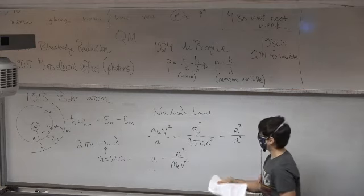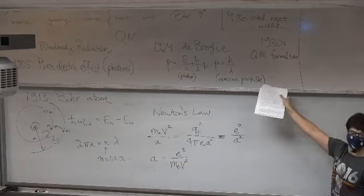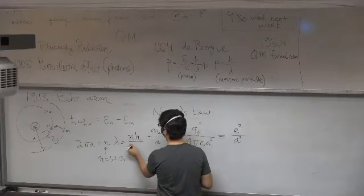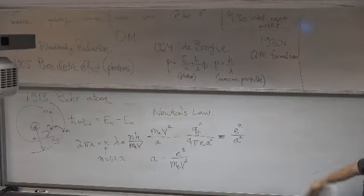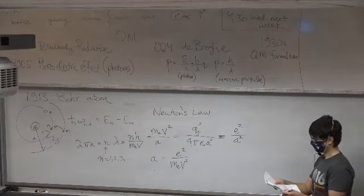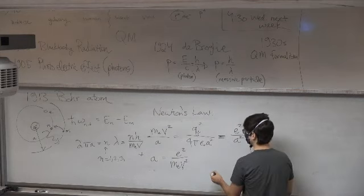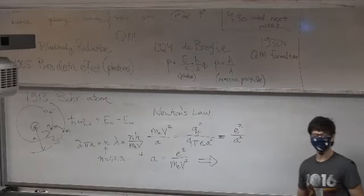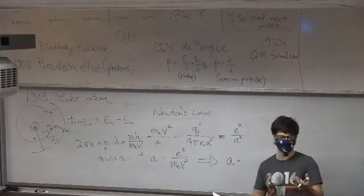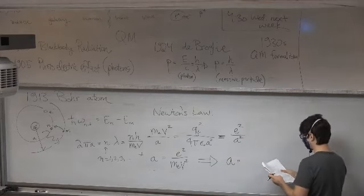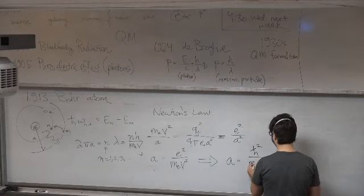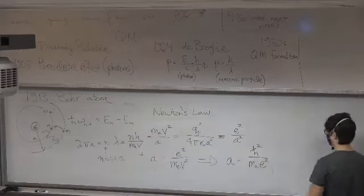Now we go back and use de Broglie's relationship for the wavelength in terms of the momentum — which is nh over mₑv. So now we can take this and solve it for v, combine these two equations, eliminate v, and in the end you get an expression just for a. Which is kind of amazing — you get just a number, a value for a, just from this physical argument. The value is ℏ²n² over mₑe². So for each n, you get a larger and larger orbit, and these are the Bohr energy levels.